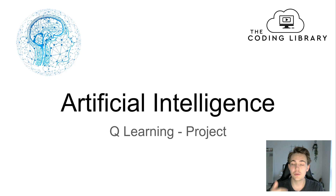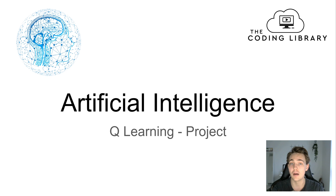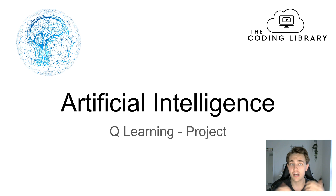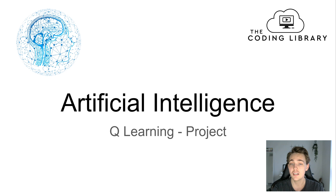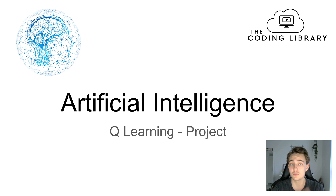In the previous videos we've been over a simple Q-learning implementation and we've also talked about the theory and all the methods behind Q-learning. So in this video we're going to have an introduction to a bigger project where we have an agent operating in a bigger and more complex environment, and by interacting with that environment it is learning by going through episodes and updating its Q-table.